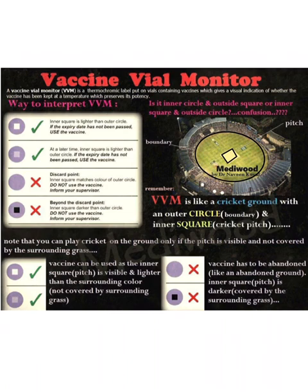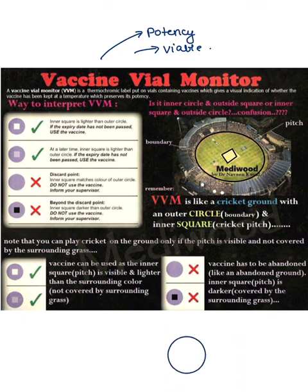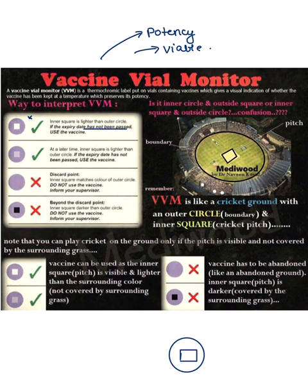The vaccine vial monitor tells about the potency of the vaccine — whether the vaccine is viable and can be used. It has an outer circle and an inner square; we compare the color of the outer circle with the inner square. You can only use the vaccine if the color of the inner square is lighter than the outer circle. In the first case, if the color is lighter and the expiry date has not passed, use the vaccine. In the second case, even if the inner square has darkened slightly, if it is still lighter than the outer circle and the expiry date hasn't passed, use it.